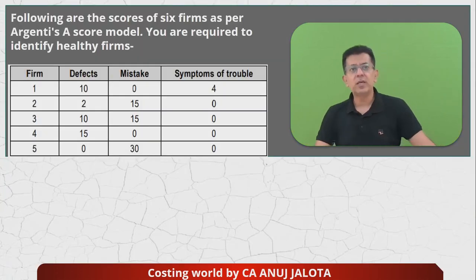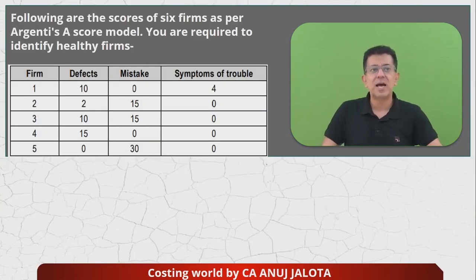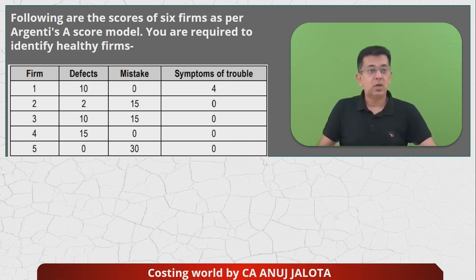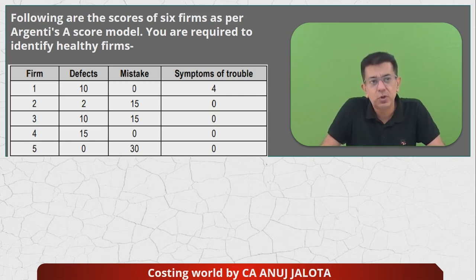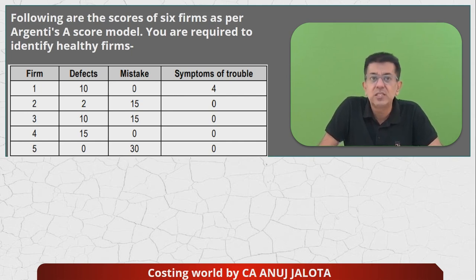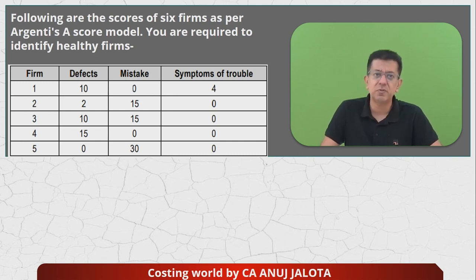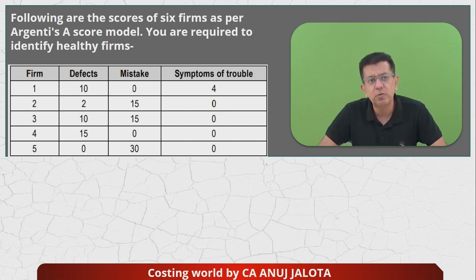Our question is: following are the scores of six firms as per Argenti's A-score model. You are required to identify the healthy firms. There are six firms' data given. Form 1: defect score 10, mistakes 0, symptoms of trouble 0. Form 2: defect score 0, mistakes 15, symptoms of trouble 0. Form 3: 10, 15, and 0. Form 4: 15, 0, and 0. Form 5: 0, 13, 0.